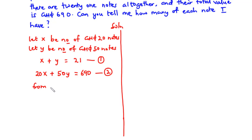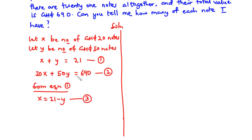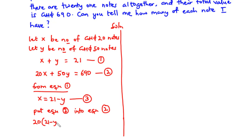From Equation 1, we can make X the subject. So X equals 21 minus Y — let's call this Equation 3. Now we are going to substitute Equation 3 into Equation 2 to find the value of Y. Substituting, we get 20 times (21 minus Y) plus 50Y equals 690.